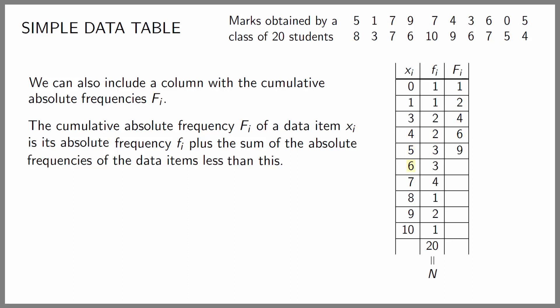The cumulative absolute frequency of 6 is 3 plus 9 which is 12. The accumulated absolute frequency of 7 is 4 plus 12 which is 16. The cumulative absolute frequency of 8 is 1 plus 16 which is 17. The cumulative absolute frequency of 9 is 2 plus 17 which is 19. Finally the cumulative absolute frequency of 10 is 1 plus 19 which is 20.